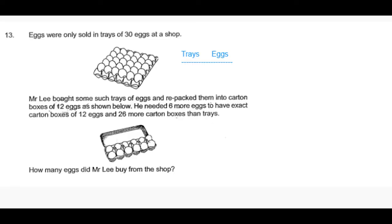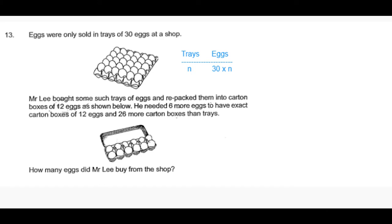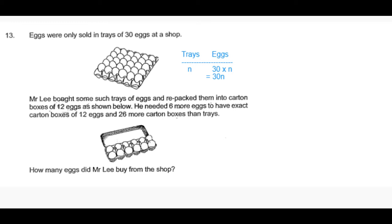Let's table down the number of trays and eggs that Mr. Lee buys. Let's assume the number of trays Mr. Lee buys as n number of trays. Each tray consists of 30 eggs, so the total number of eggs he buys is 30 times n, which can also be written as 30n.